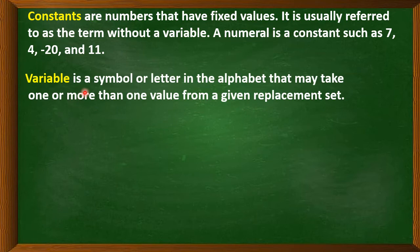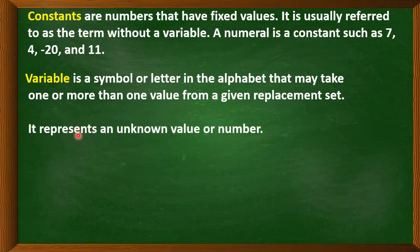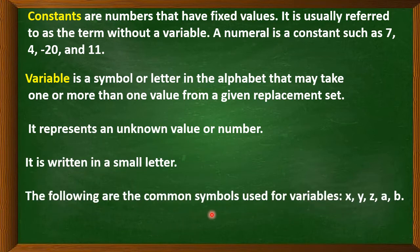Next, variable. A variable is a symbol or letter in the alphabet that may take one or more than one value from a given replacement set. A variable represents an unknown value or number. It is written in a small letter. The most common symbols used for variables are x, y, z, a, and b. Always remember, variables are letters in the alphabet from A to Z.